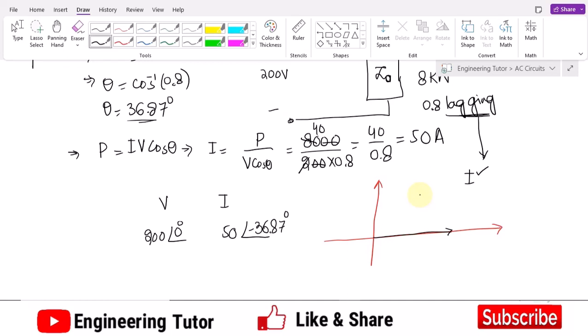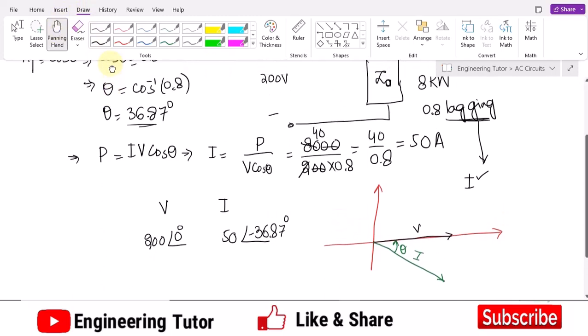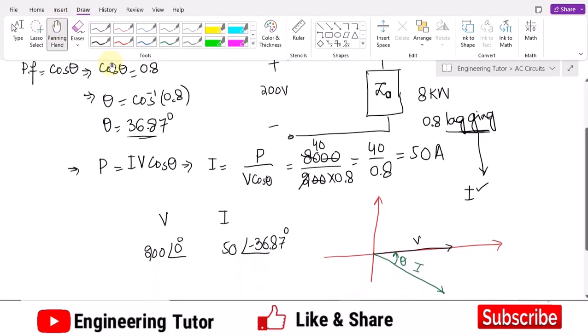On the phasor diagram you will very easily see that if this is the voltage which is now leading, the current here will be lagging and the angle it is making is theta. That is the phasor diagram and this relationship is valid. From it I have calculated all the values.